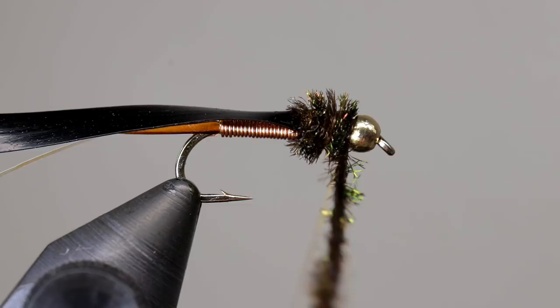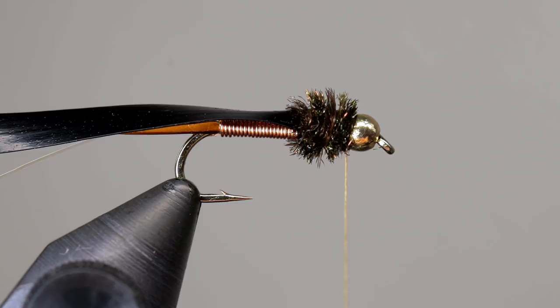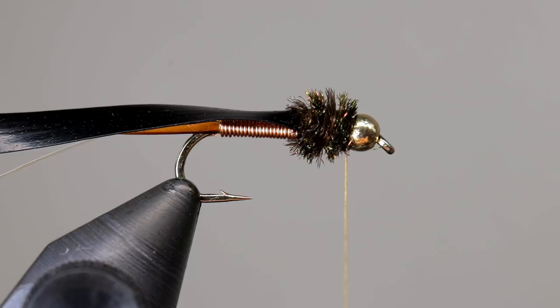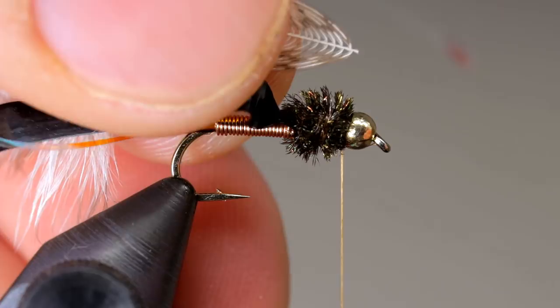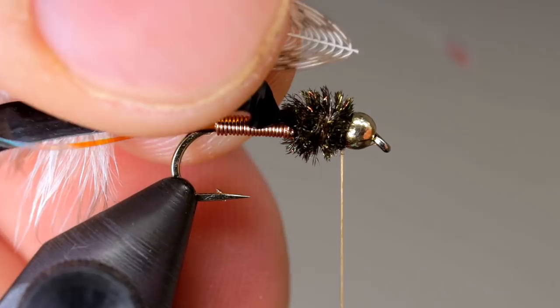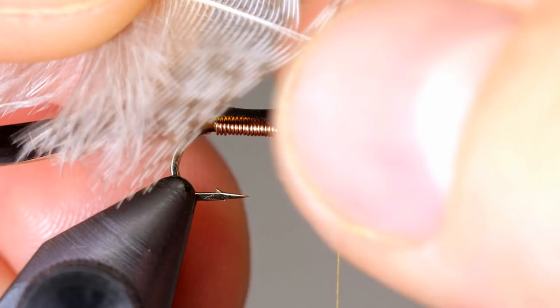The legs are formed with a single partridge feather. This is another variation from the original, but I like to tie in both sets of legs at the same time. Prepare the feather by pulling most of the fibers back, and cut the stem so the fibers form a V shape. Pull about 8-10 fibers forward into their natural position, and strip off everything behind that point.